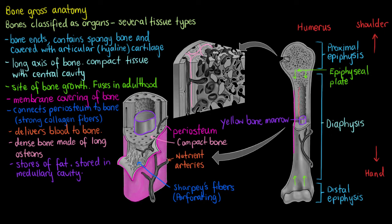The last structure within the diaphysis is the endosteum. We have the periosteum on the outside, which is the membrane, and the inner surface of the medullary cavity is called the endosteum. It doesn't have a membrane, but endosteum is the name for the surface area of that inner cavity.